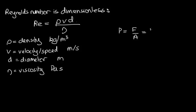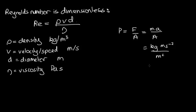So we've got kilograms over metre second squared. Pascal seconds means pascals are kilograms over metre second squared, times seconds. That cancels, and we end up with kilograms over metre seconds as the units for viscosity.